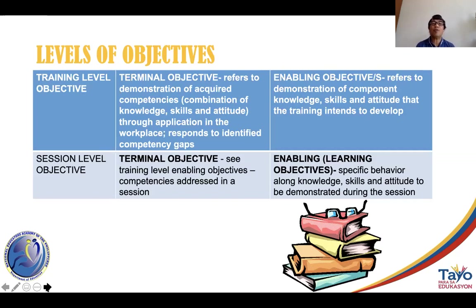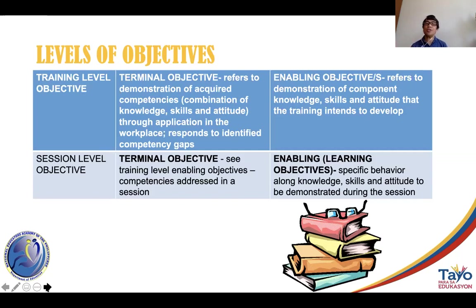The terminal objective refers to the demonstration of acquired competencies — a combination of knowledge, skills, and attitude — through application in the workplace. It responds to identified competency gaps. The terminal objective is then broken down into enabling objectives, which refer to the demonstration of component knowledge, skills, and attitude that the training intends to develop. You break down the terminal objective into specific knowledge, skills, and attitudes, and the demonstration of each within the training forms the enabling objectives.